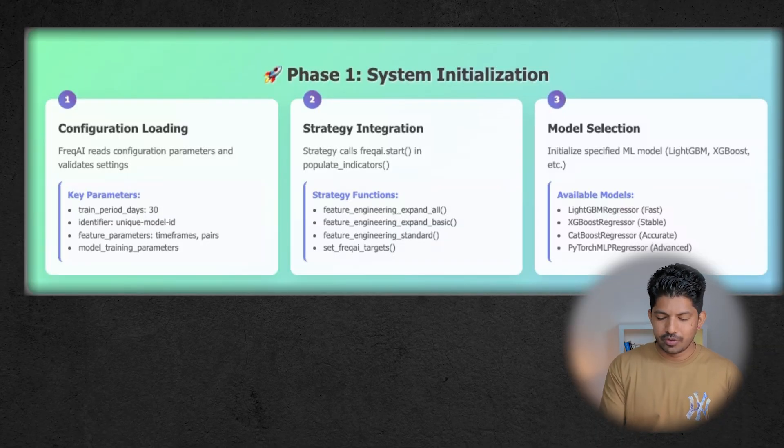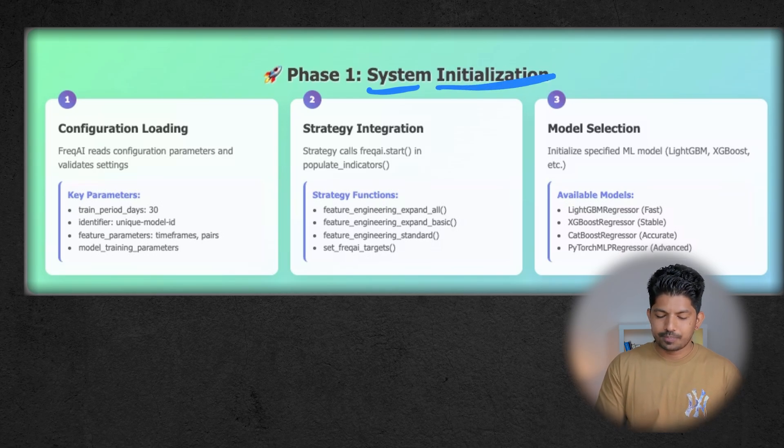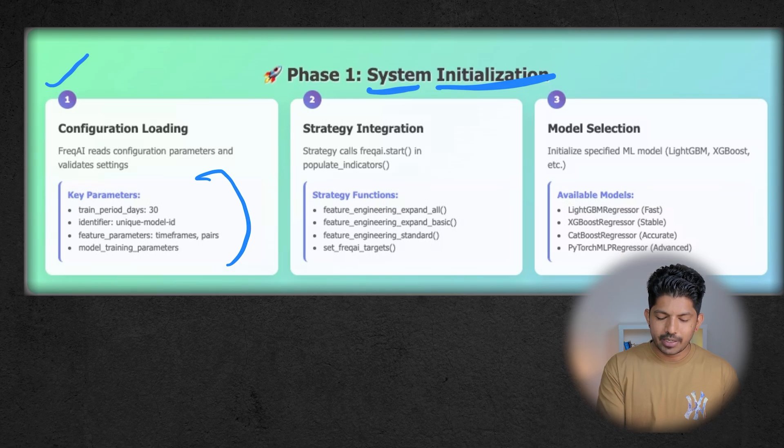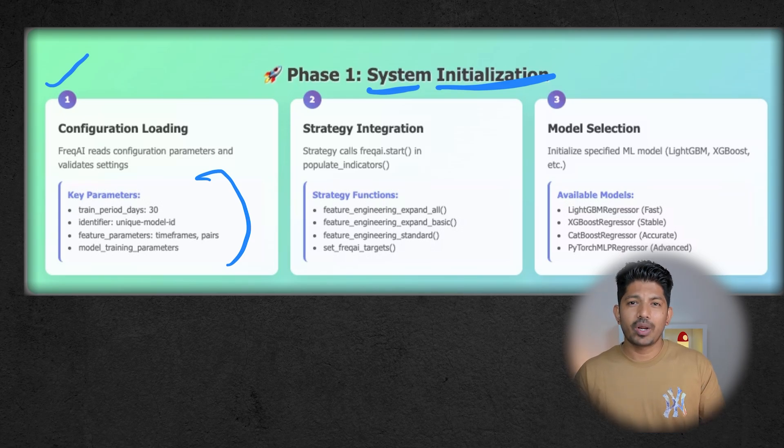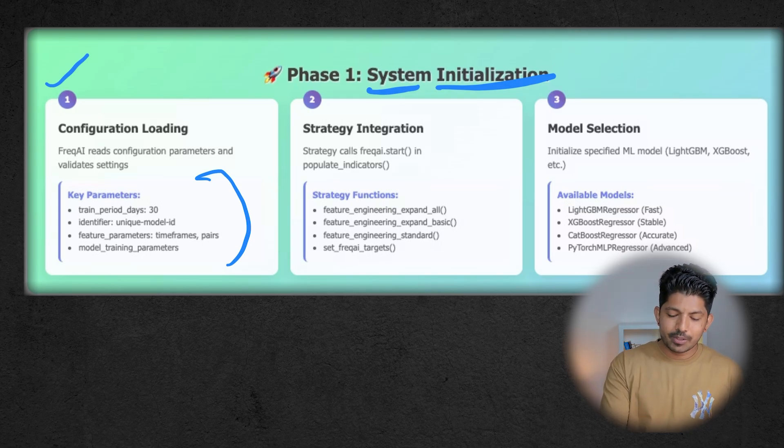When they execute FreqAI, Phase 1 is system initialization. In this, first is configuration loading, where FreqAI reads the config parameters and validates settings—for example, train period days identifier, feature parameters, and model training parameters. If we have gone through previous sessions of FreqAI in Freqtrade, you know that we have a JSON file and in that we define all the parameters, so the first step is it loads that config file. Then it integrates the strategy. The strategy calls freqai.start in populate_indicators. In this, mainly we have functions like feature_engineering_expand_all, feature_engineering_expand_basic, feature_engineering_standard, and set_freqai_targets.